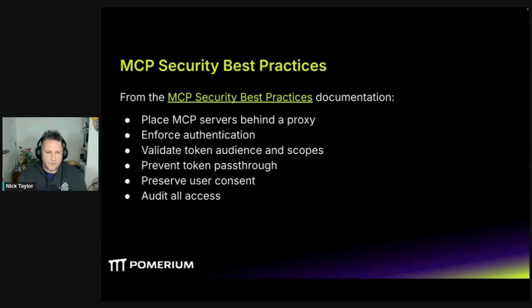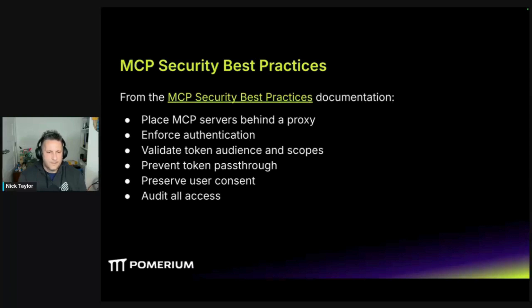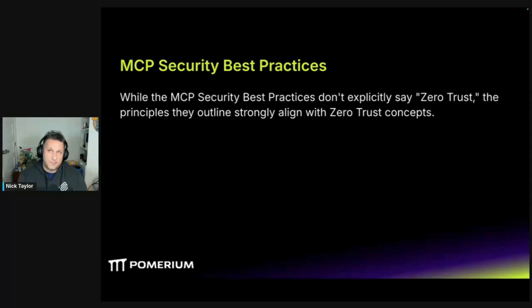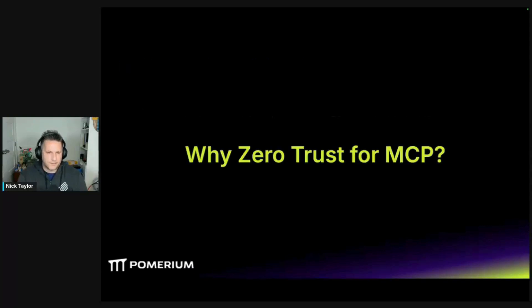Let's talk about MCP security best practices. I'm not going to go into the whole paper — there's a link in the resources — but the key takeaways are: place MCP servers behind a proxy, enforce authentication, validate tokens for audience and scopes, prevent token pass-through, preserve user context, and audit as much as possible. While the MCP security best practices don't explicitly say 'zero trust,' a lot of those principles strongly align with zero trust concepts.